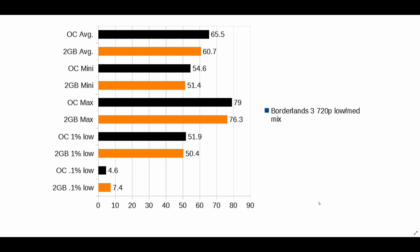Borderlands 3 used the built-in benchmark at 720p with a mix of low and medium settings. The OC average is 65.5, up from 60.7. Minimum is up to 54.6 from 51.4, max is up to 79 from 76.3, and the 1% low is up to 51.9 from 50.4. The 0.1% low came in at 4.6 versus 7.4 — another strange one I can't fully explain, but that's the numbers I ended up with.